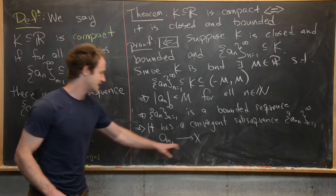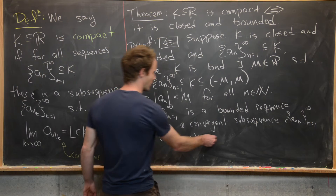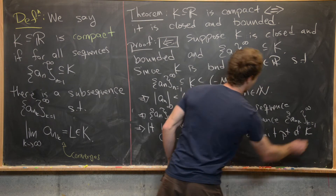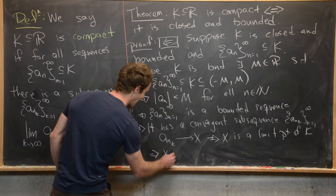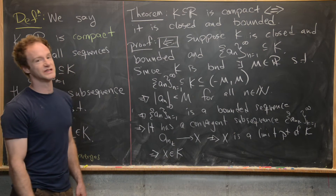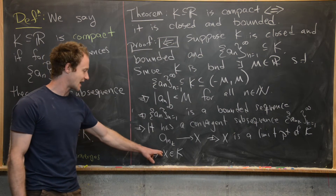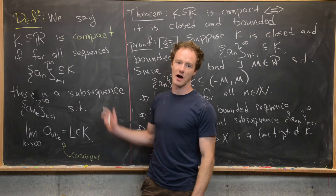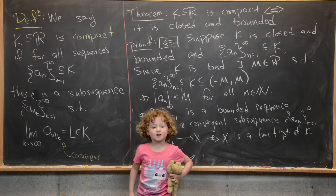Say that a_{n_k} converges to X. That tells us X is a limit point of K by the sequential definition of limit points. But since K is closed, it contains all of its limit points, so X is inside K. Look at what we've done: we took an arbitrary sequence and found a convergent subsequence that converges to something inside K — but that's exactly what we need to satisfy the definition of compactness. That finishes the backwards direction of the proof.